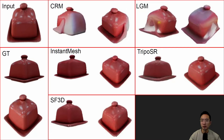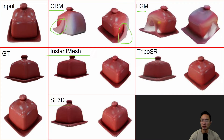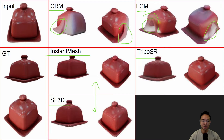Here are more examples comparing popular methods: CRM, Instant Mesh, SF3D, LGM, and TripOSR. With CRM you can see all these weird unwanted artifacts. Instant Mesh is doing pretty well and is actually pretty comparable to SF3D, though SF3D had notable speed advantages. LGM is pretty bad. The top contenders are definitely SF3D and Instant Mesh, while TripOSR tends to be a lot darker.